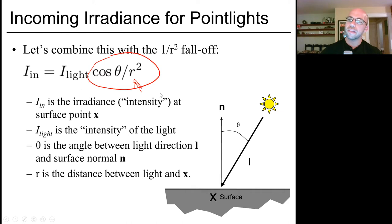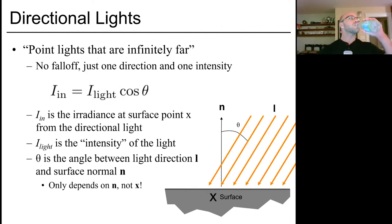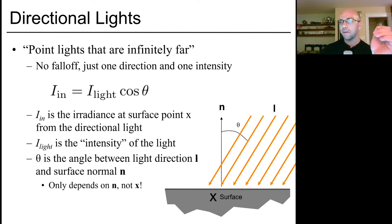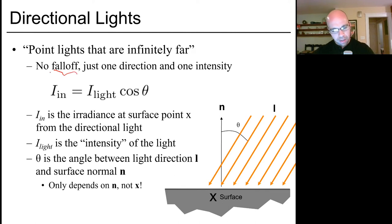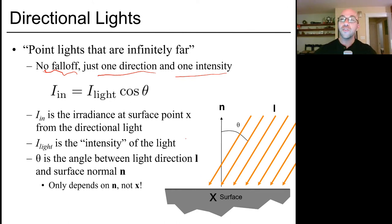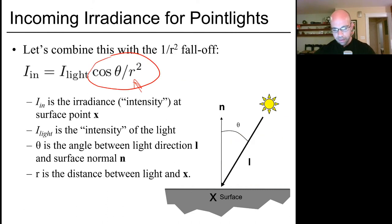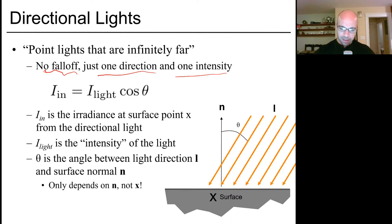One variation worth noting is directional lights. If we're rendering an outdoor scene, the sun is very far away, so computing its exact position and intensity might be overkill. A more typical approach for directional lights is to get rid of falloff and have light move in one direction with one intensity — no 1/r² term, and the direction to the light doesn't change across the scene. This assumes all light rays move parallel to one another, which is a pretty good approximation for outdoor scenes or when a distant light is lighting everything uniformly.